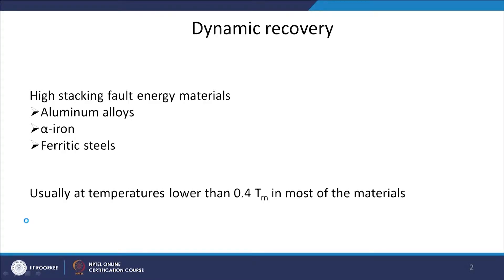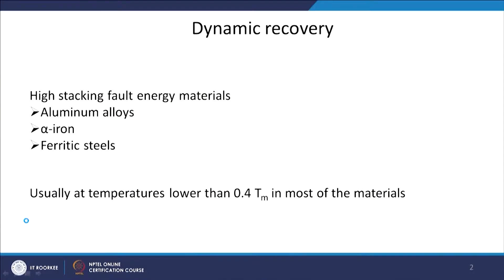If we define where dynamic recovery will be an important process: for high stacking fault energy materials — that means materials which have high stacking fault energy — these kinds of materials show predominantly dynamic recovery instead of dynamic recrystallization. Aluminium alloys and alpha iron ferritic steels are important examples that come under high stacking fault energy materials and they show predominantly dynamic recovery.